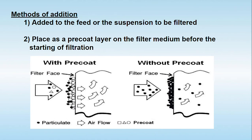There are two methods for adding a filter aid during filtration. The first method is to add the filter aid directly to the feed, suspension, or slurry to be filtered. The slurry contains insoluble solid particles in a liquid, and by filtration we want to remove those solids. When filter aid is added to the slurry, it gets retained on the filter medium along with the insoluble solids.